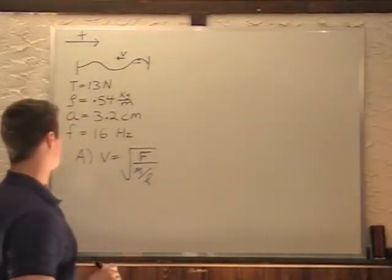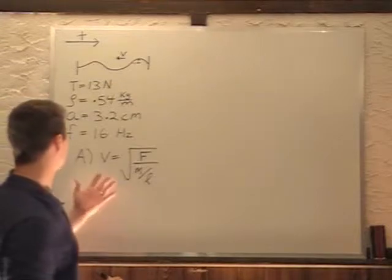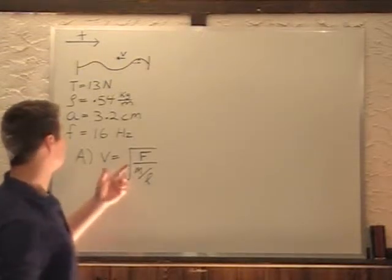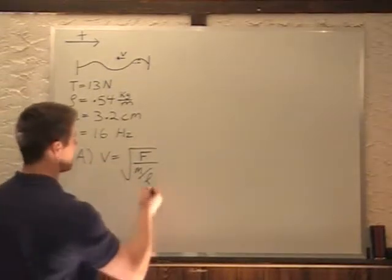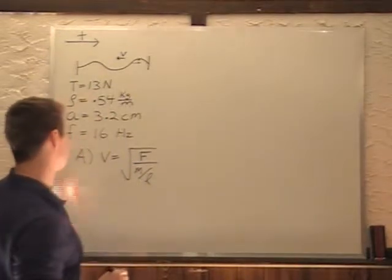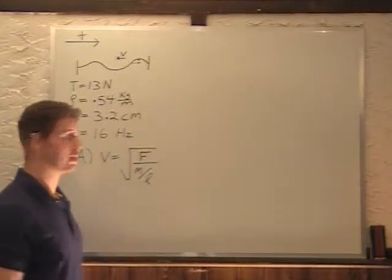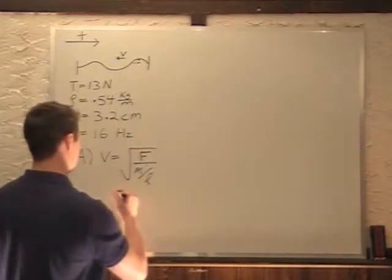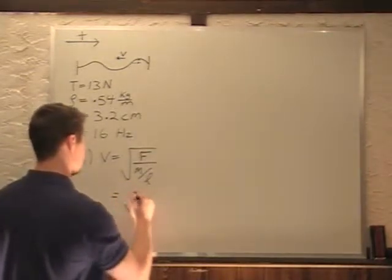So this is our equation for finding the velocity of a wave in a string. So this M over L is what I've labeled as rho. Rho is generally density. M over L, mass per unit length, that's density.